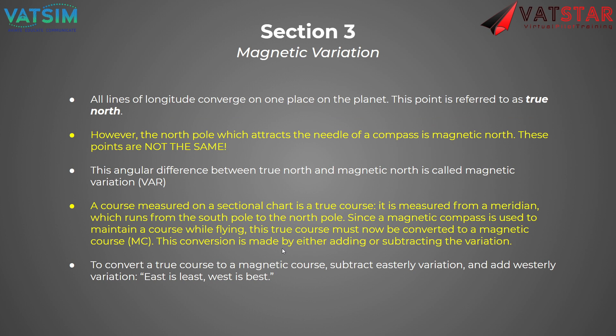All lines of longitude converge on true north, and there's also true south at the south pole. However, the magnetic north pole, which tracks the needle of a compass, is not the same point as true north. The angular difference between those lines is called magnetic variation, and we'll actually see that on the sectional chart as purple dashed lines called isogonic lines. A course measured on the sectional chart when you draw a line from point A to B is a true course — using true north and south, not magnetic. The compass in the airplane, which is used to maintain a course, shows magnetic north, so we need to convert from one to the other.